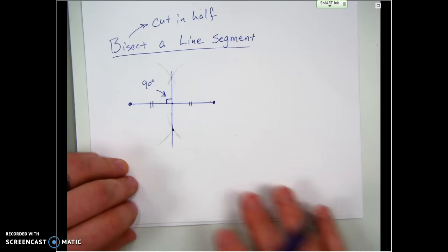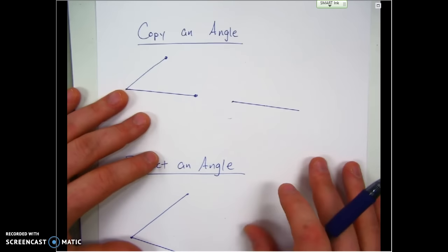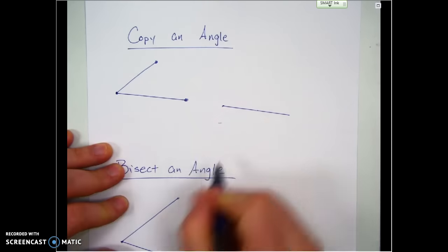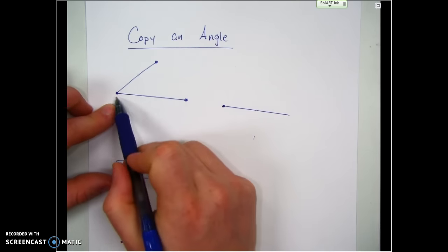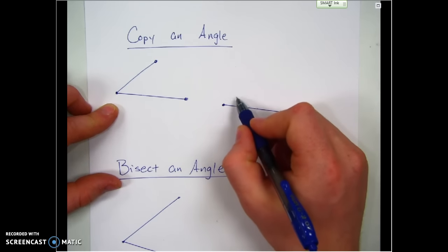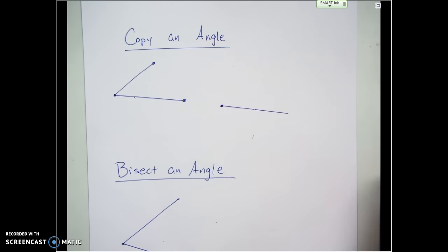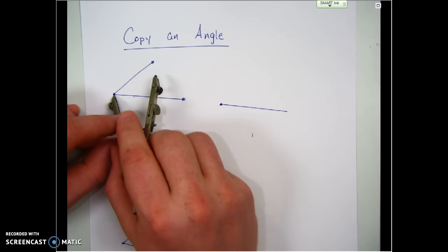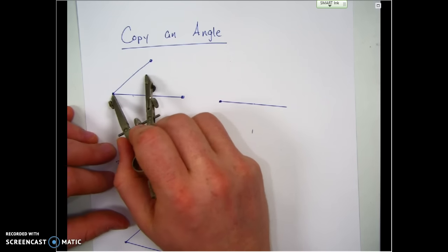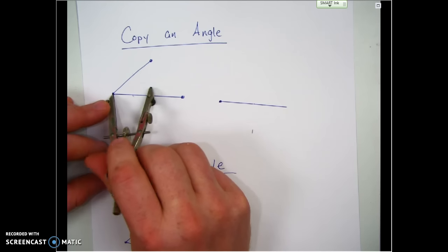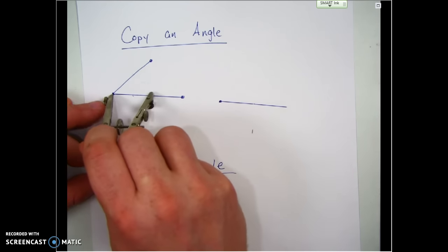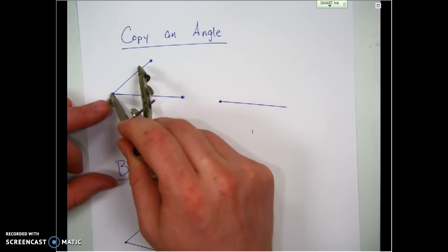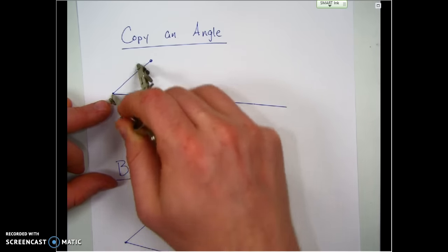Things get just a little bit more complicated when we work with angles, so we're going to do the same thing with angles. First I'm going to copy an angle. Here's an angle — here's one side of my angle — and what I want to do is copy this other side so that the degrees between the two sides are exactly the same. I'm going to use my compass and set the width to make an arc on either side of my original angle.